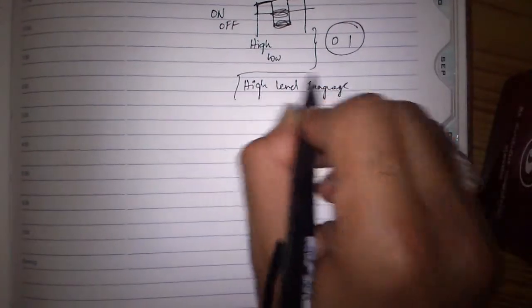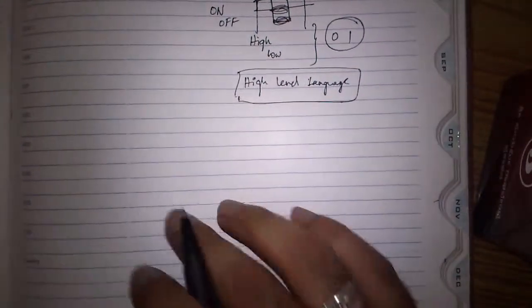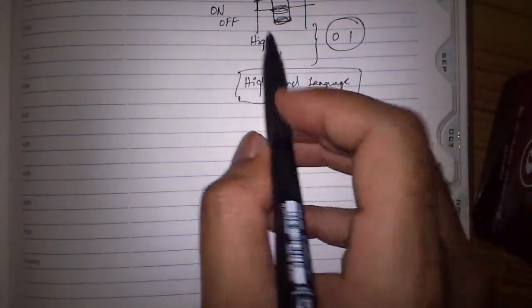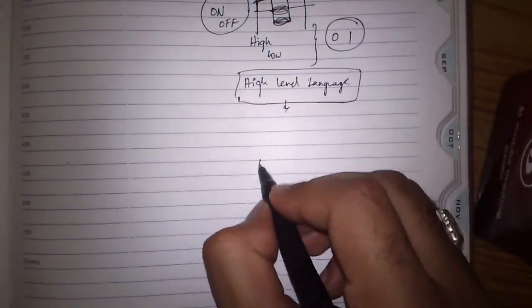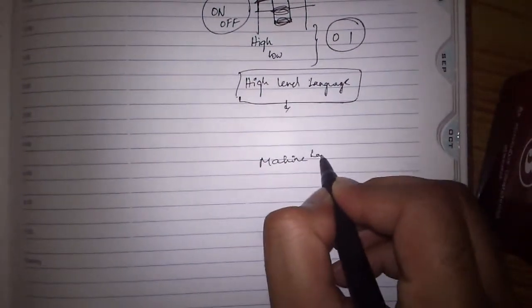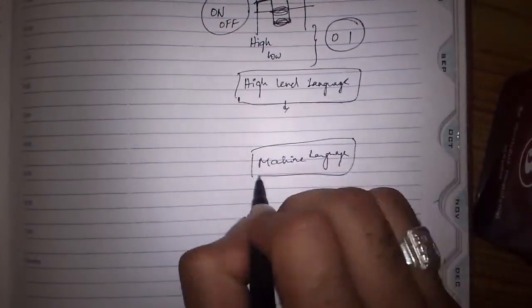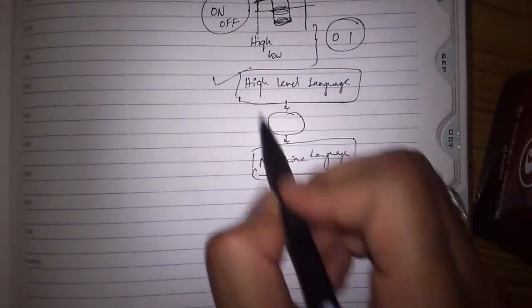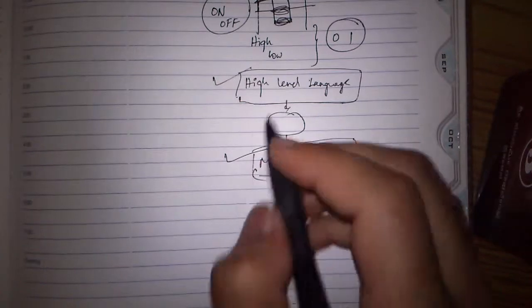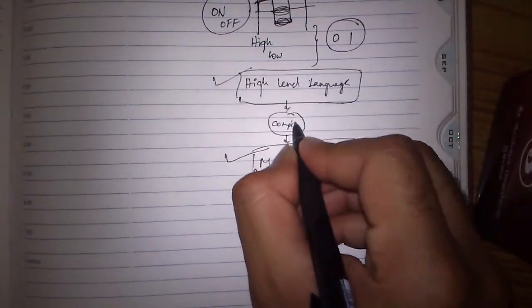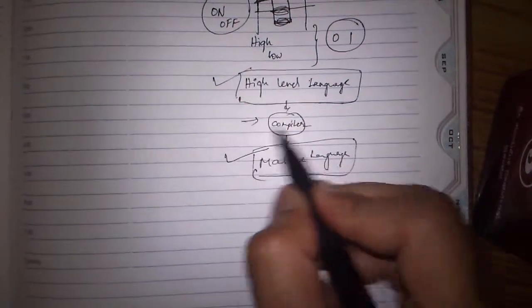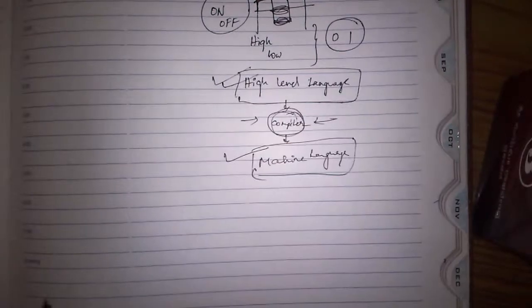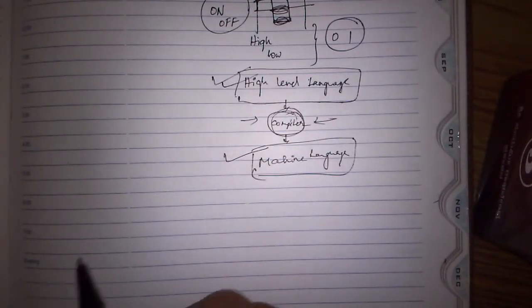Now they have thought of something called a high-level language, but computer understands only machine language, right? We want someone in between to convert this high-level language to machine language. Here we get our hero, compiler. This guy sitting in between, he reads this high-level language and converts into machine level language.